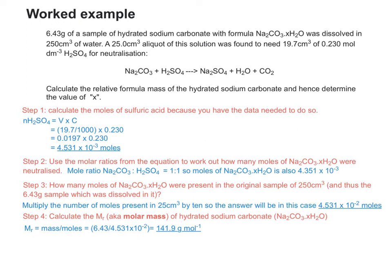So we're nearly there. The last thing to do is to try and work out how much of that 141.9 grams per mole to the minus 1 is actually water. So to do that, you take away the molar mass of the anhydrous salt, the Na2CO3 bit. From a periodic table, you can add all that up, and then it gives you a value of 35.9 for XH2O.